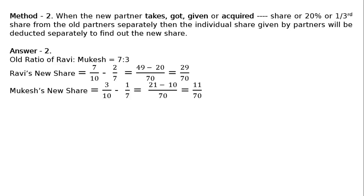Mukesh's new share, that is, his original old share was 3/10. Minus he gave 1/7th of his share, that is equal to LCM 70, 21 minus 10, that is equal to 11/70.